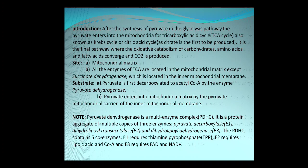Pyruvate is the first substrate, which is decarboxylated to acetyl-CoA by the enzyme pyruvate dehydrogenase. Pyruvate enters the mitochondrial matrix by pyruvate mitochondrial carrier of the inner mitochondrial membrane, since pyruvate is impermeable to the mitochondrial membrane. Note: pyruvate dehydrogenase is a multi-enzyme complex — a protein aggregate of three enzymes: pyruvate carboxylase (E1), dihydrolipoyl transacetylase (E2), and dihydrolipoyl dehydrogenase (E3). This complex of pyruvate dehydrogenase contains five enzymes in total.